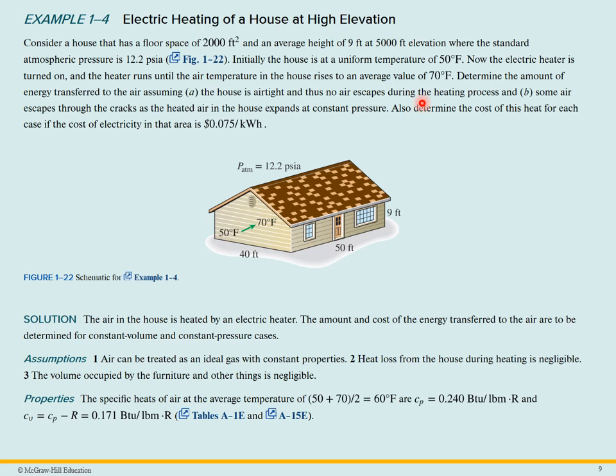Part B, we want to calculate it when some air escapes and it expands at constant pressure. And finally, we want to determine the cost if the electricity is 0.075 cents per kilowatt hour.